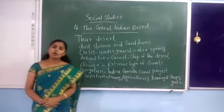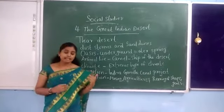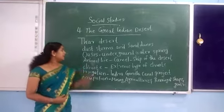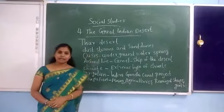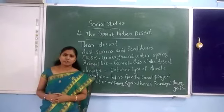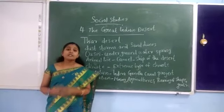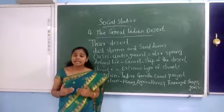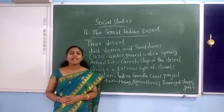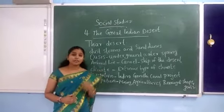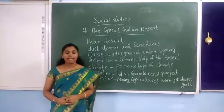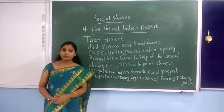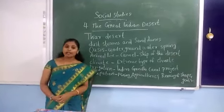Let us move on to the features of this Great Indian Desert. The first feature is desert stones and sand. Desert stones means strong winds which carry sand over a large area. Sand dunes are hills of sand. Another feature is oasis, which means underground water springs.